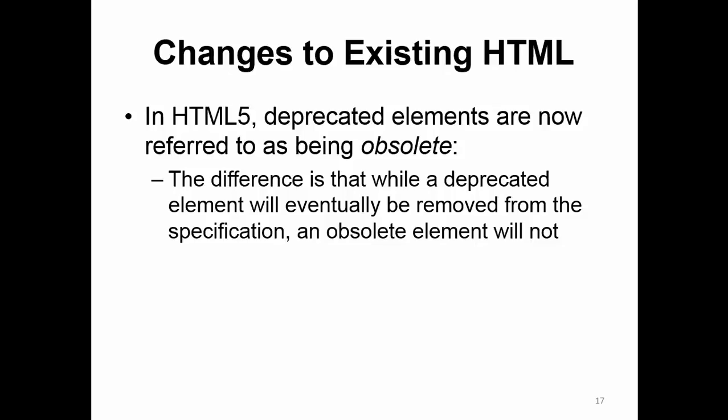In HTML5, deprecated elements are now referred to as being obsolete. The difference is: while a deprecated element will eventually be removed, an obsolete element will not. My take is that many of these tags have been on sites for years and years. Even though new development should not include these tags, there are millions — if not billions — of them in existing development. So although they're deprecated, they'll probably never be removed. That's why they're called obsolete now.